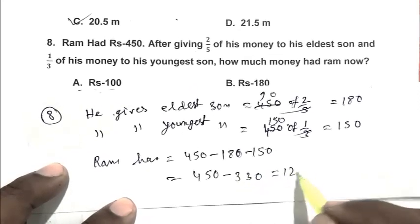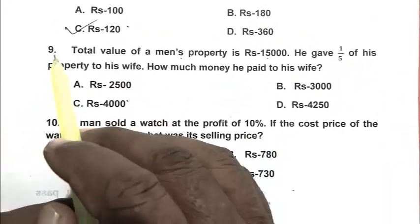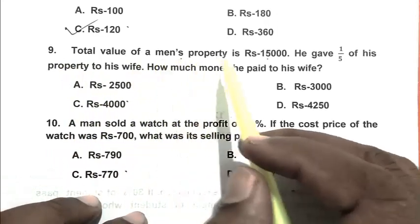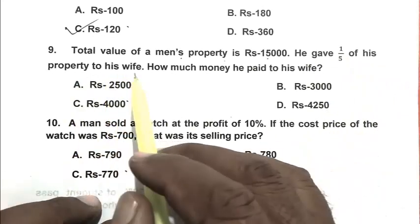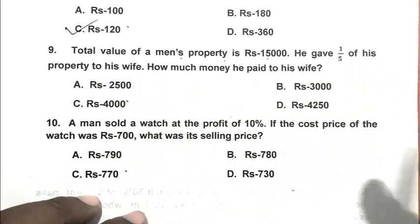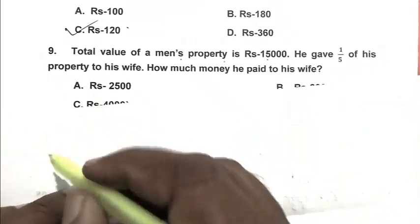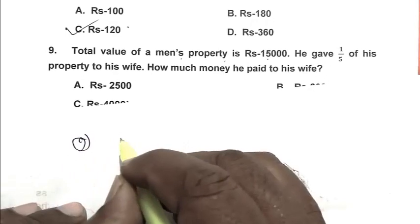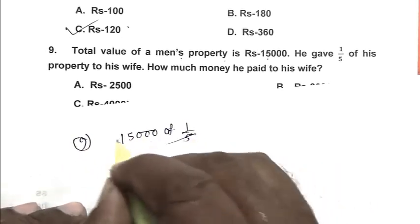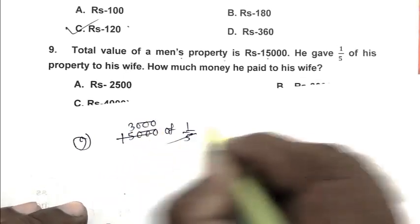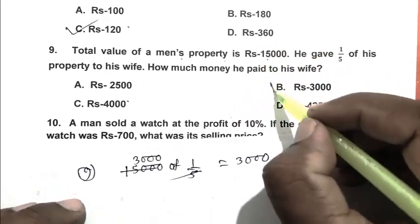Question number 9: Total value of a man's property is rupees 15,000. He gave one-fifth of his property to his wife. How much money he paid to his wife? He paid to his wife 15,000 of one-fifth, that is 3,000. So B is the right answer.